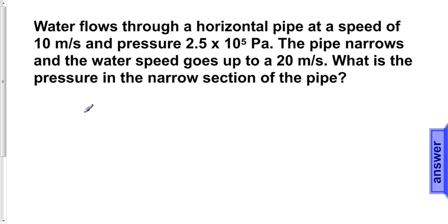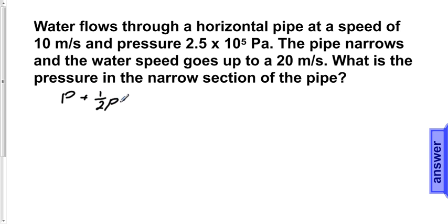In order to solve this problem, we need to use Bernoulli's principle, in this case using the equation associated with a change in pressure. This equation reads: pressure plus one-half density of the liquid times the velocity of the liquid squared, plus density times gravity times the height of the pipe, is equal to a constant value.